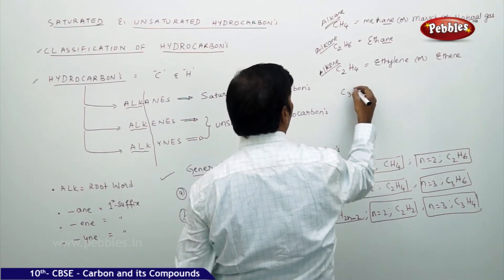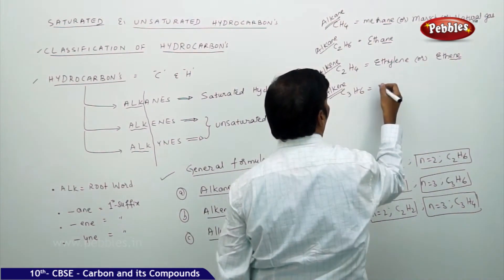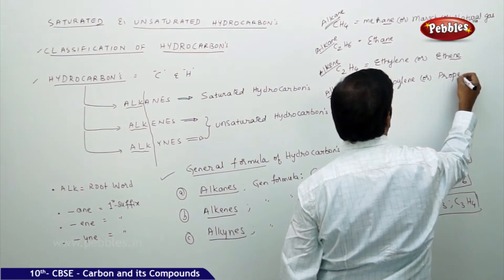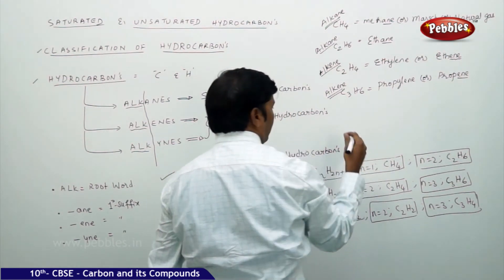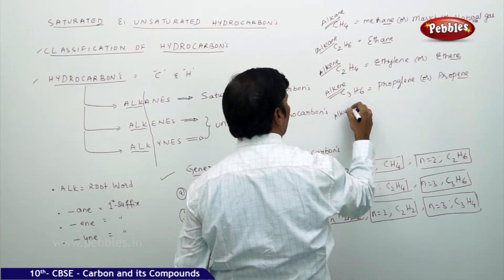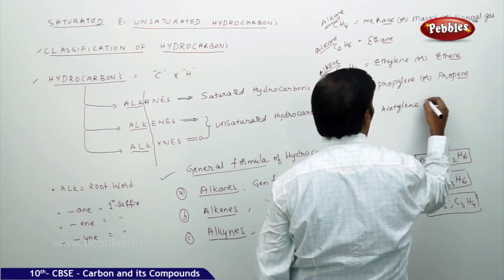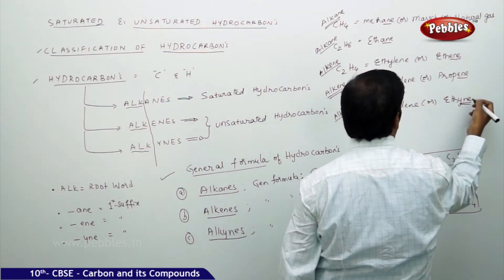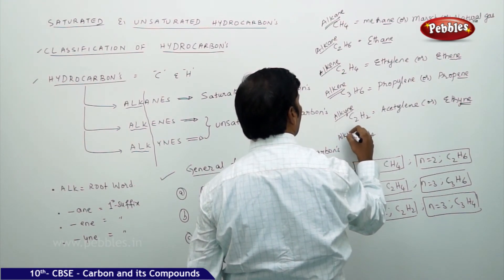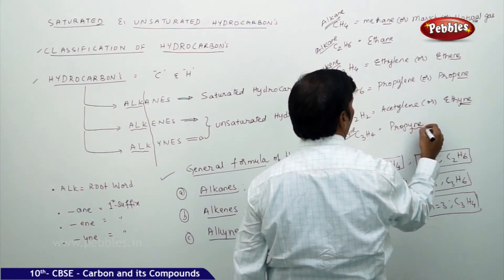C₃H₆ is propylene or propene — it is an alkene, ending with '-ene'. C₂H₂ is an alkyne called acetylene or ethyne. C₃H₄ is also an alkyne, called propyne.